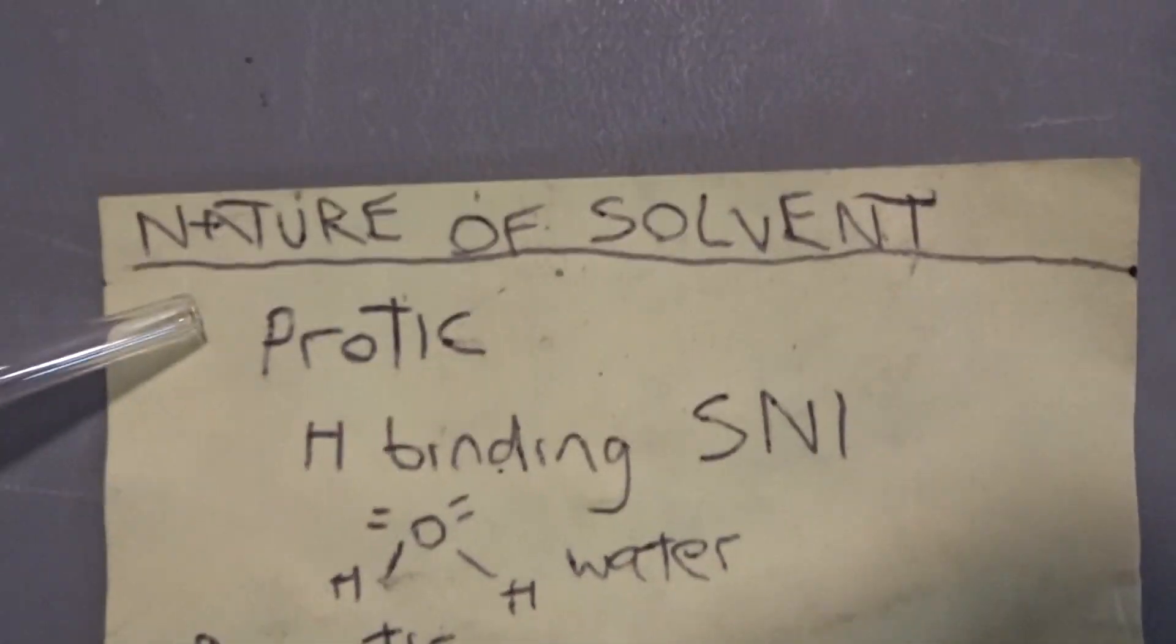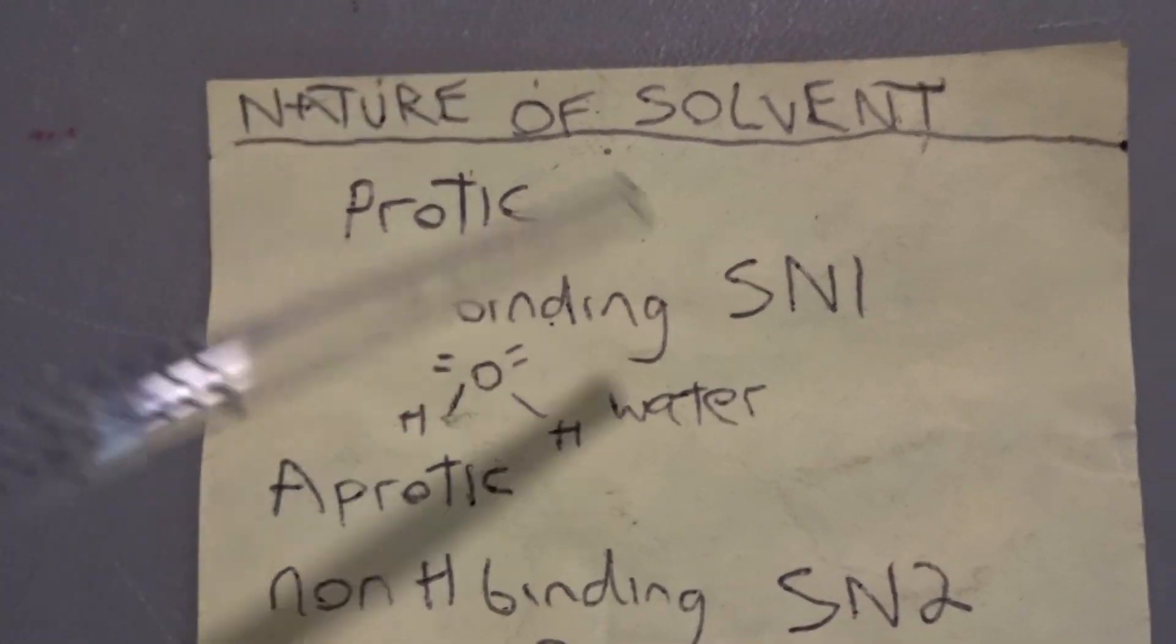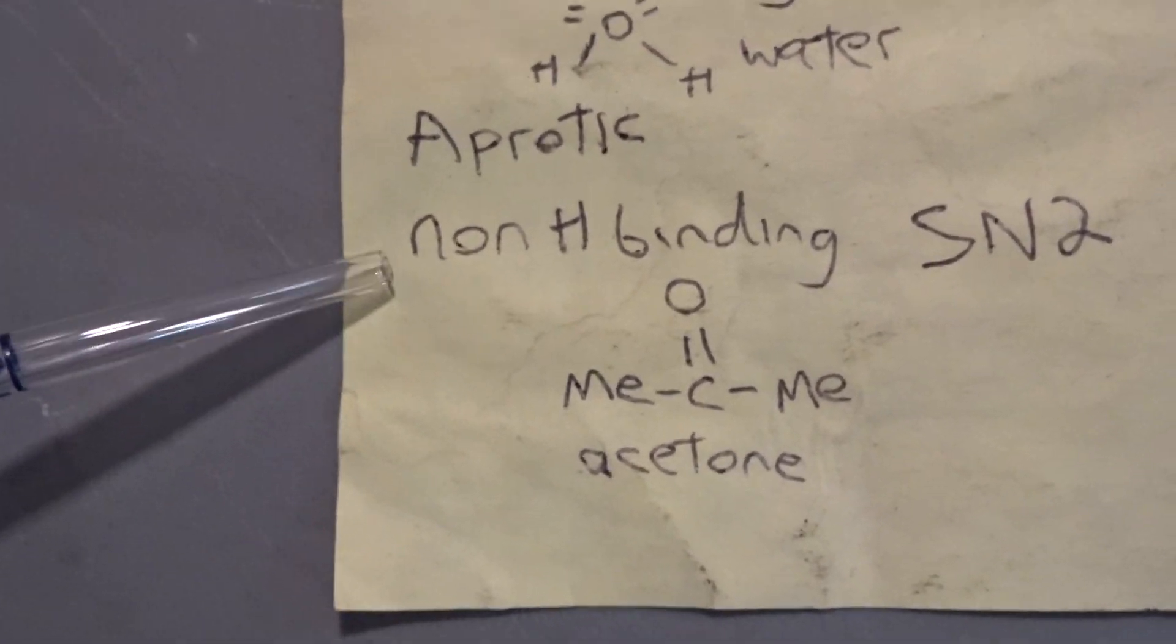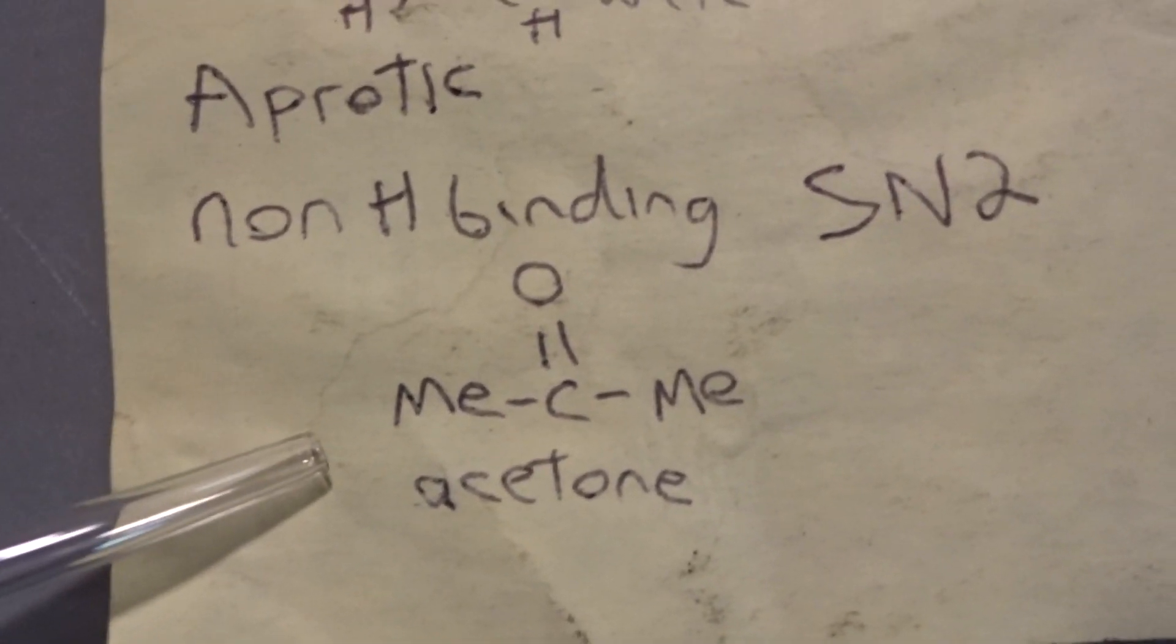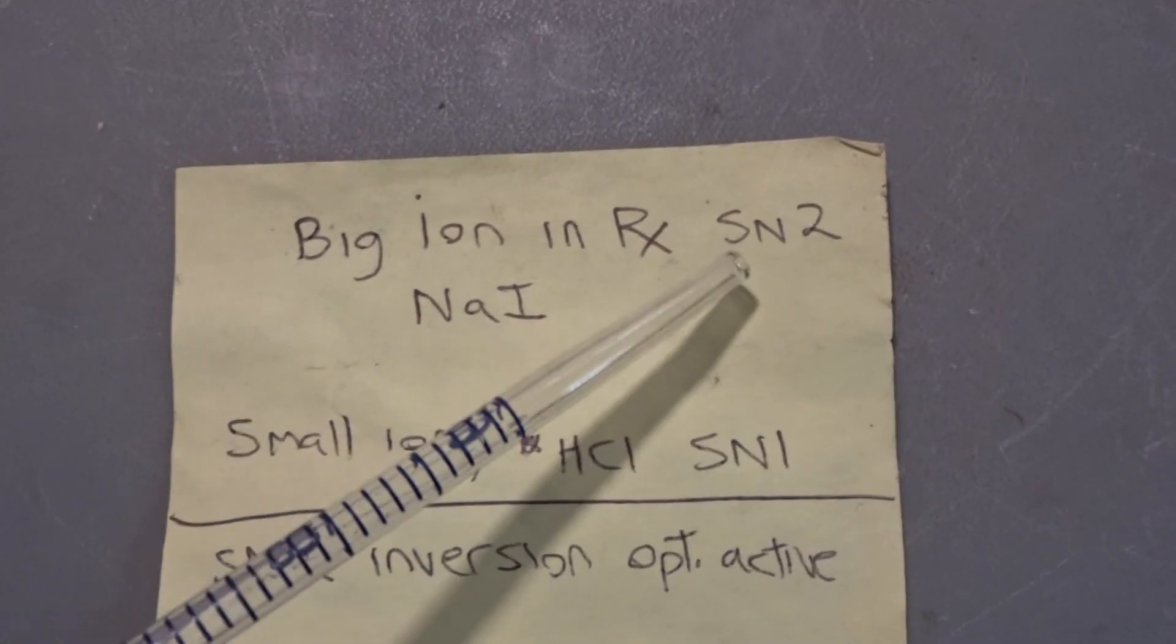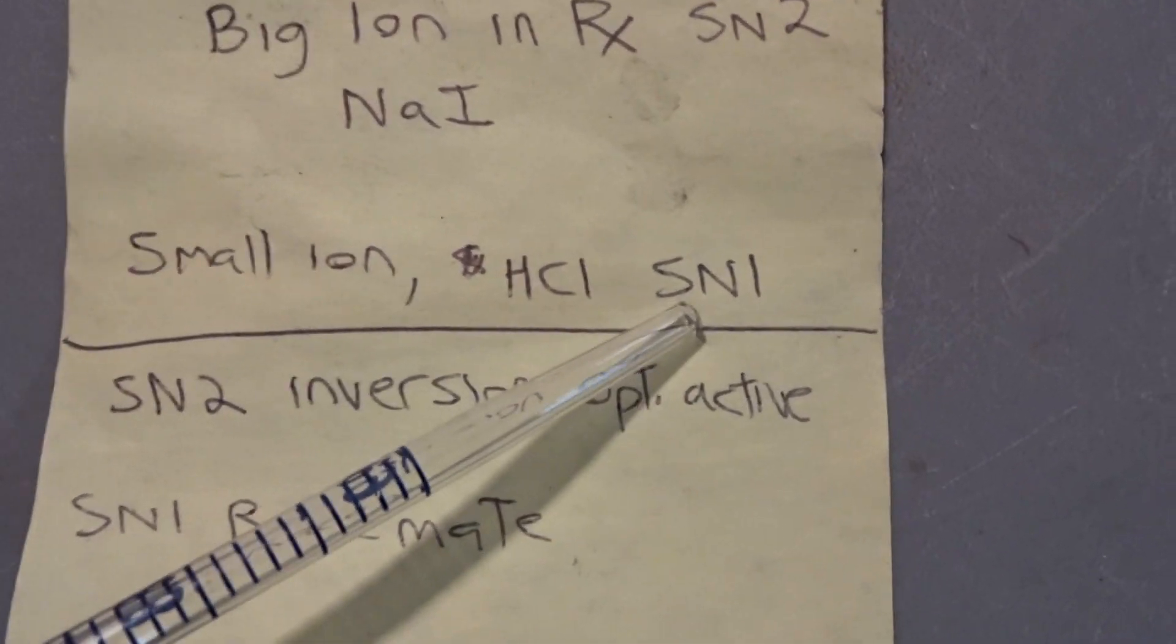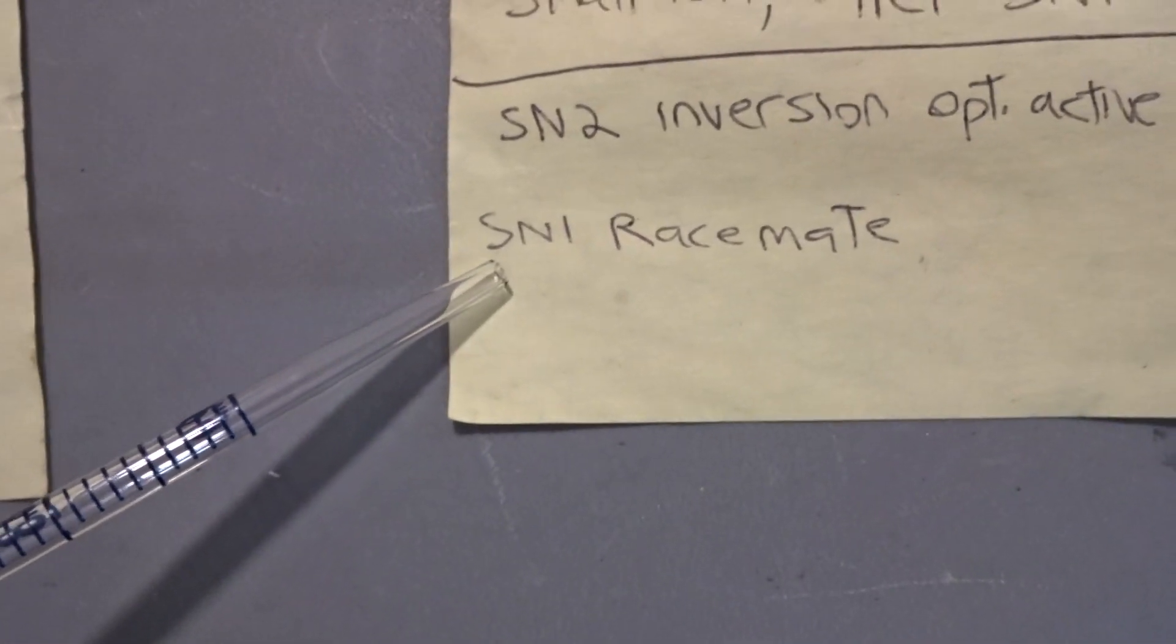But what is the nature of this solvent? We have protic and aprotic. For protic, that's hydrogen bonding and an SN1 reaction. Here's a little molecule of water. That's what you want to use. For aprotic, you want non-hydrogen bonding, forming an SN2 reaction, not an SN1, and you'll use acetone as the solvent. And also, what about big ions in a reaction, such as SN2? Use sodium iodide. That's a big ion. Small ions are hydrochloric acid and will be an SN1. SN2 inversion, which is optically active, and SN1 is racemate.